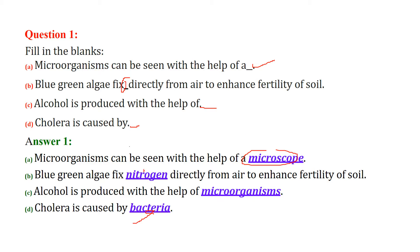Now let us see the formal answers. Microorganisms can be seen with the help of a microscope. Blue-green algae fix nitrogen. Alcohol is produced with the help of microorganisms — this is the generic answer. And cholera is caused by bacteria.